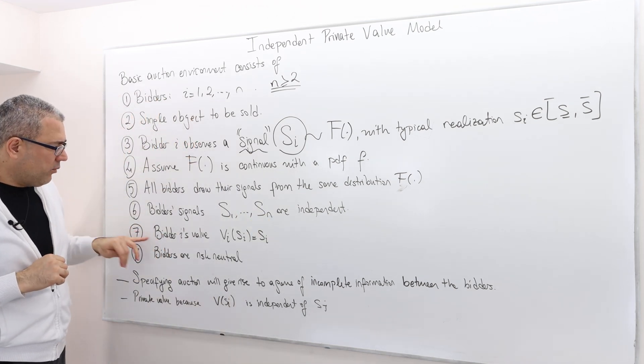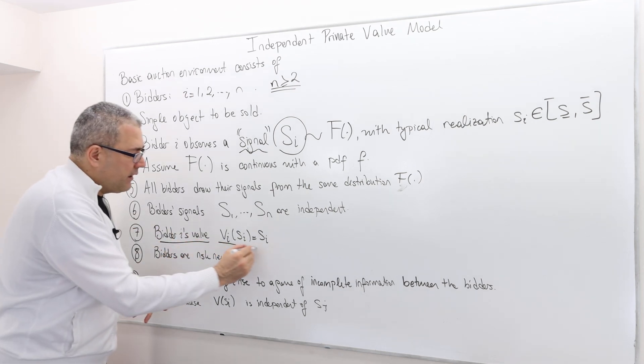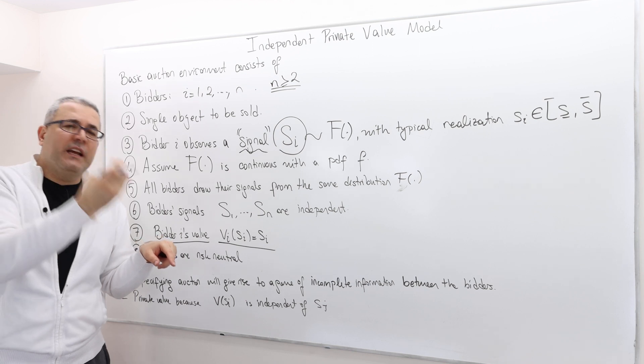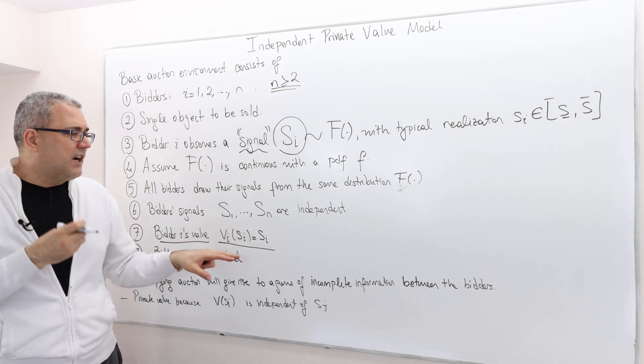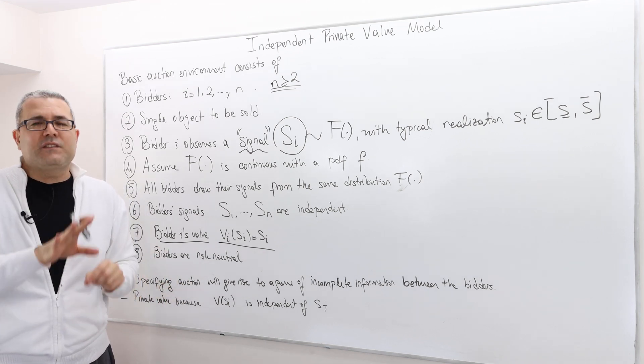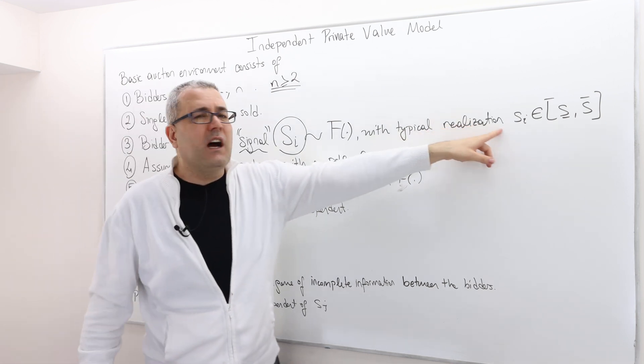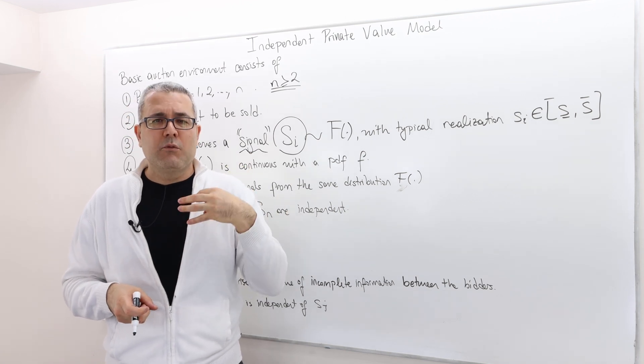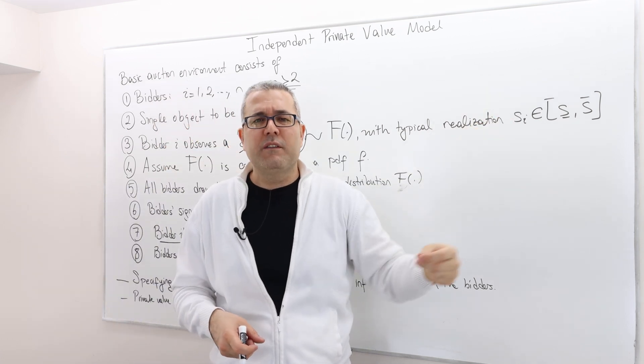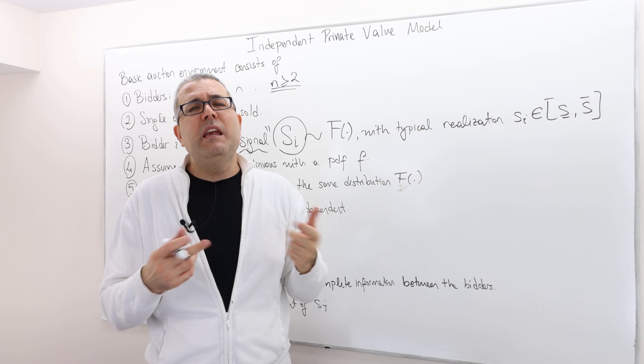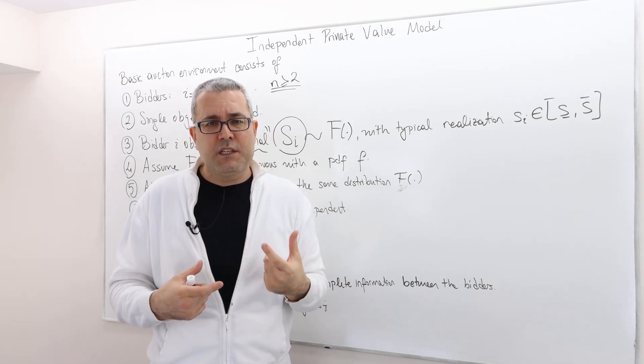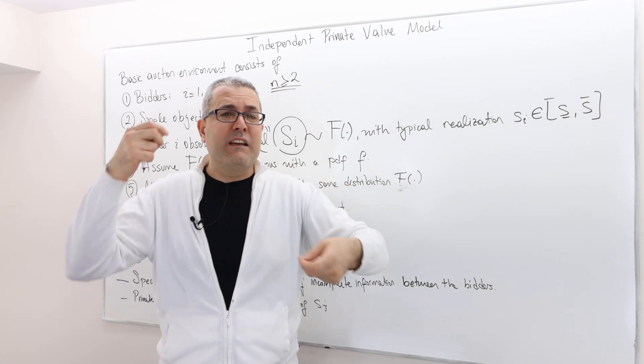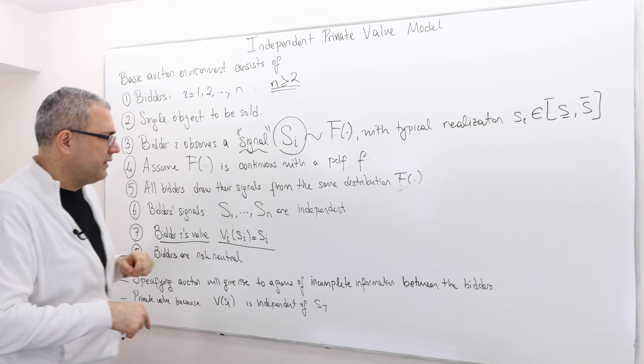Bidders' value is basically his signal. Just for simplicity, assume that vi, the value that you're going to attach given that the signal you have is si, is just si itself. Some textbooks just use vi's—instead of calling it signal, the model says each bidder is going to draw his valuation from some distribution, and so they don't use the signal component. But I use this notation mainly because I also want to talk about common value auctions.